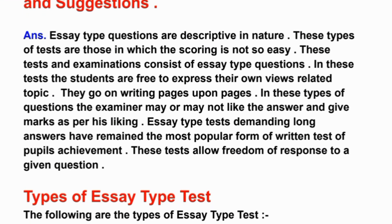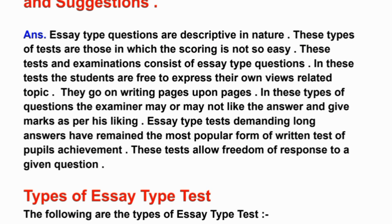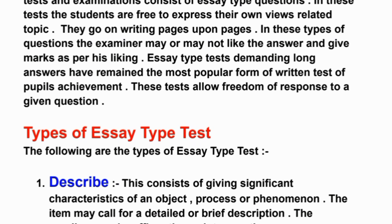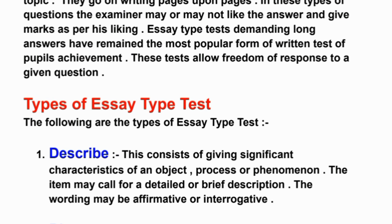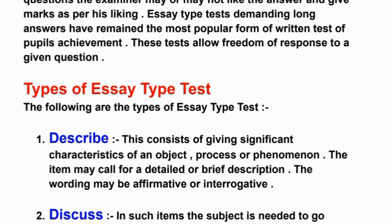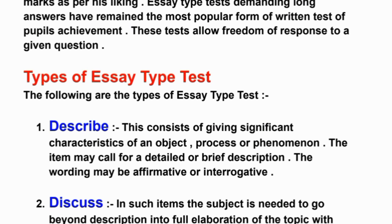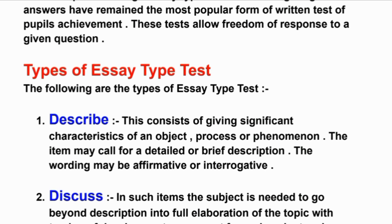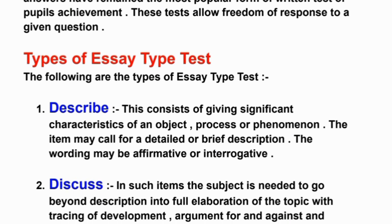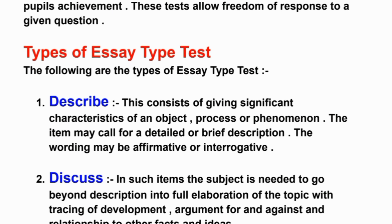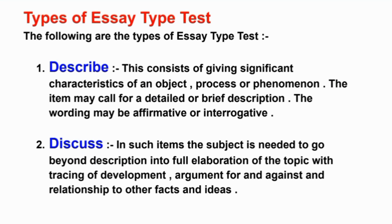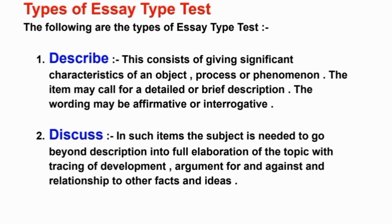Types of essay type tests. First, Describe: this consists of giving significant characteristics of an object, process, or phenomena. The item may call for a detailed or brief description, and the wording may be affirmative or interrogative. Second, Discuss: the subject is needed to go beyond description into full elaboration of the topic, with tracing of development, argument for and against, and relationship to other facts and ideas.